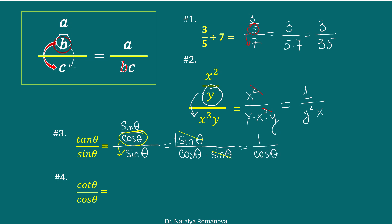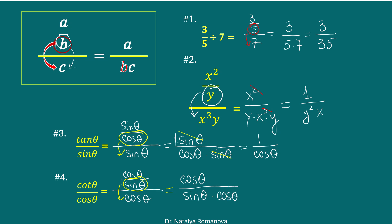Next example: cotangent divided by cosine theta. Cotangent is cosine theta divided by sine theta, divided by cosine theta. Sine theta goes to cosine theta in the denominator. We have cosine theta divided by sine theta multiplied by cosine theta. The cosines cancel out, so finally we have 1 divided by sine theta.